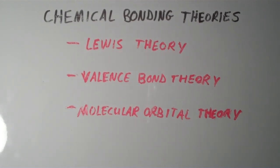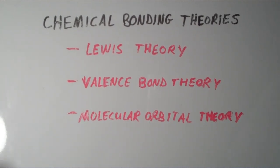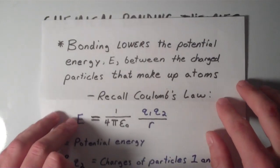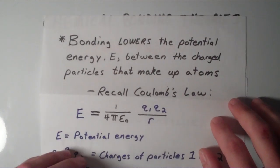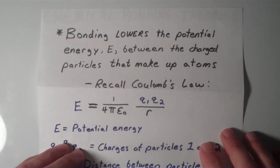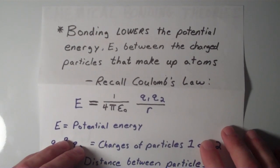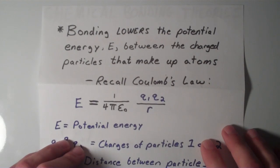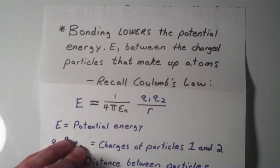So to start with, we're going to answer the question, why do chemical bonds form in general? What makes them form? The answer to that is that bonding lowers the potential energy, which we call E, between the charged particles that make up atoms, which of course are the protons and the neutrons, positive and negative respectively.